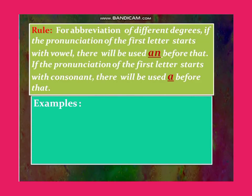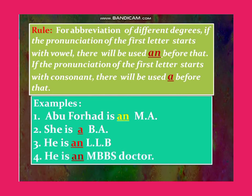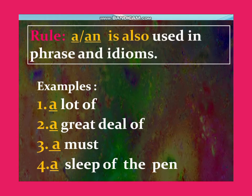For abbreviations of different degrees, if the pronunciation of the first letter starts with a vowel sound, use 'an' before it; if it starts with a consonant sound, use 'a' before it. For example: Abu Farhat is an MA. She is a BA. He is an LLB. He is an MBBS doctor. 'A' or 'an' is also used in phrases such as: a lot of, a great deal of, a must, a slip of the pen.